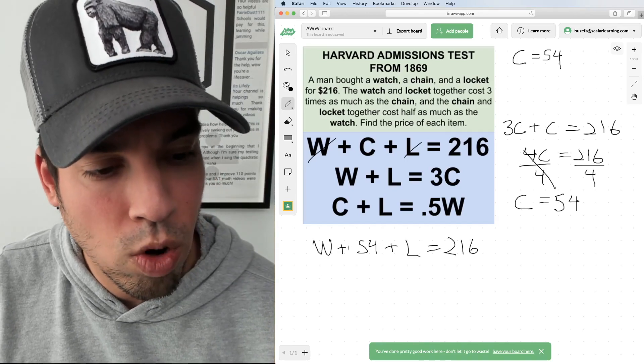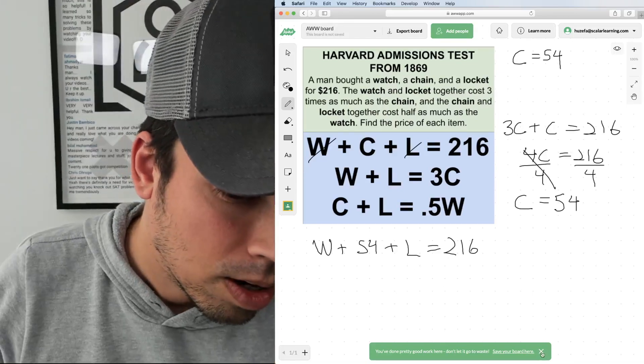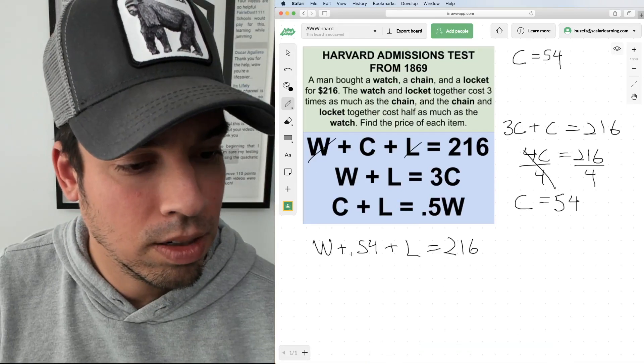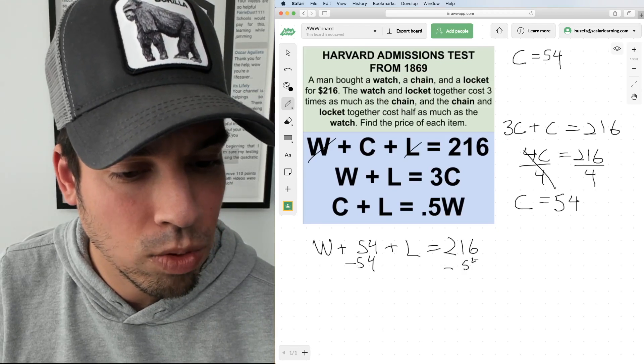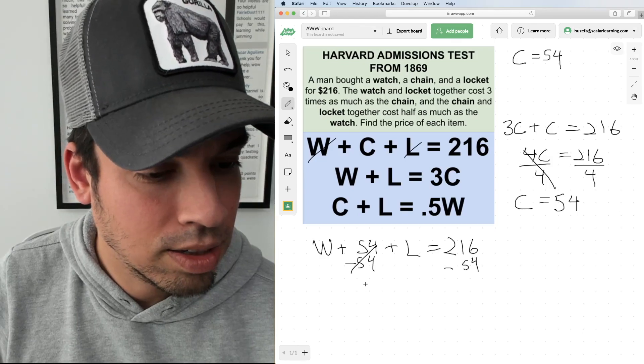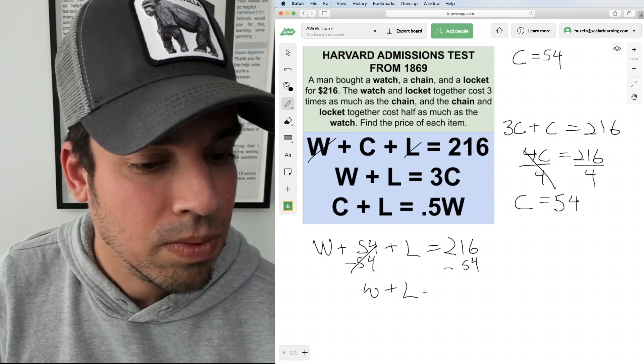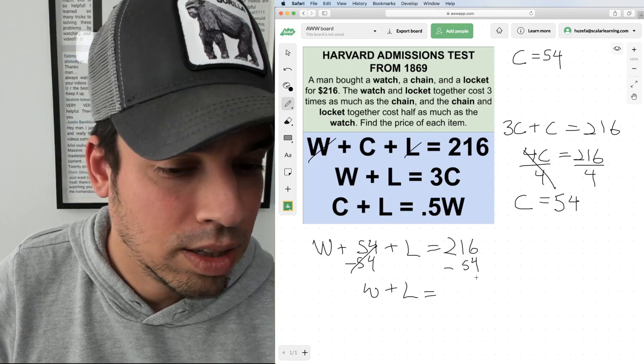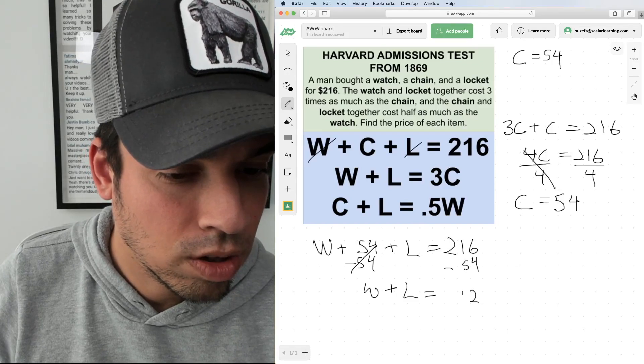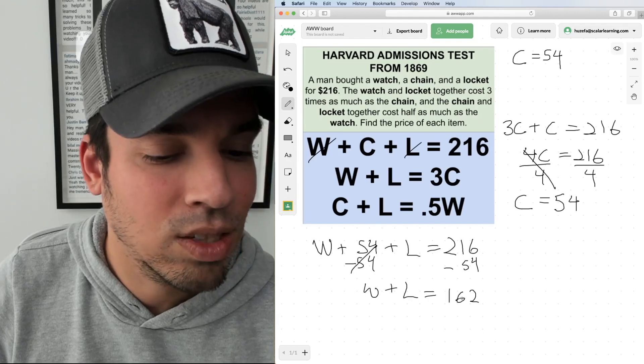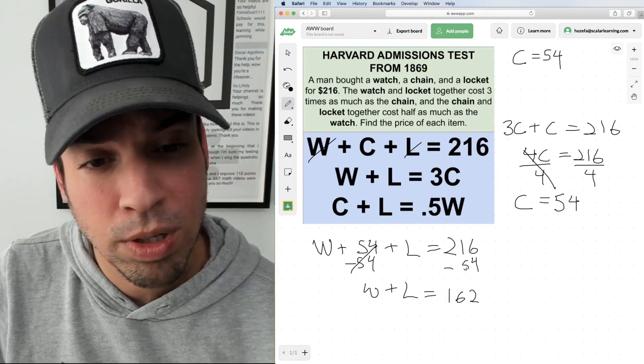Now we're just solving for the watch and the locket. I can subtract 54 using some variable isolation, and we've got W plus L equals 162. That's a pretty good equation to have.